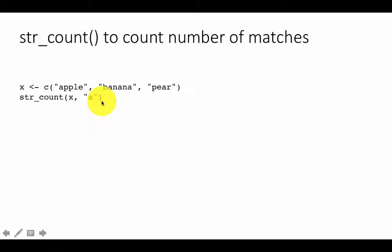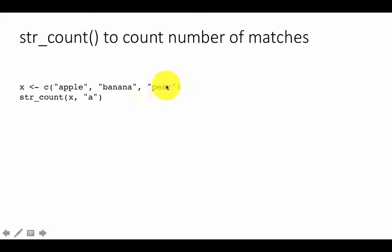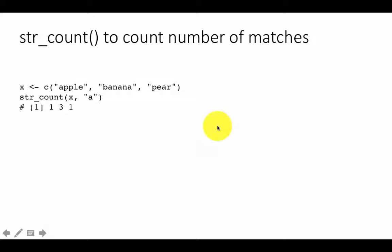We call `str_count(x, 'a')` — we want to find out for each of these words how many times the letter 'a' occurs. The result is one for 'apple', three for 'banana' (a, a, a), and one for 'pear'. That's the result you see here. Now, how might you use `str_count` in the context of an actual table? This was just a vector showing you the basic use of the function.